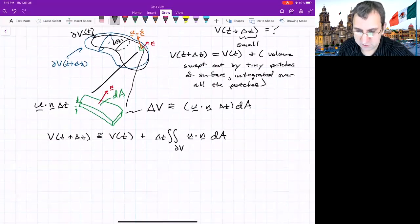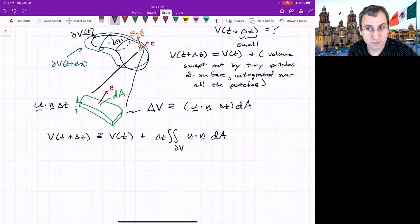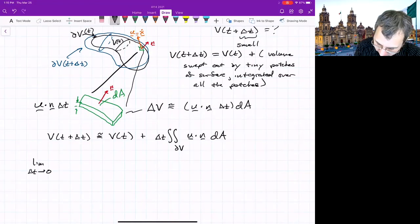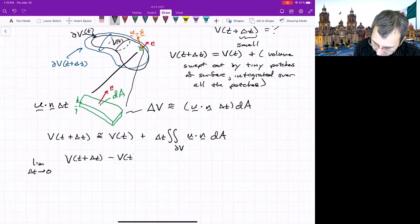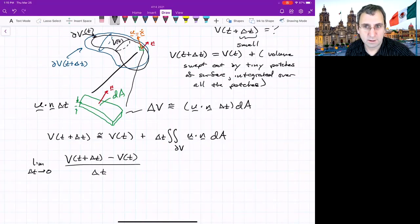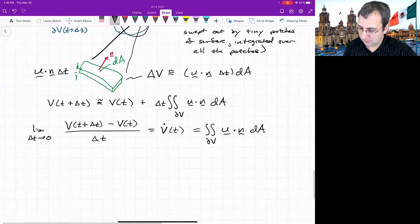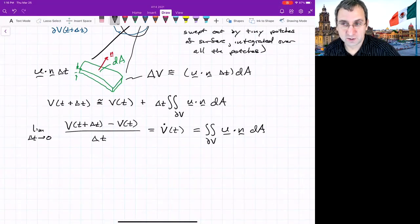This actually becomes equal if we look at the limit. So let's think about that. Let's take the limit as delta t goes to zero, and what do we have there? So the limit as delta t goes to zero, and let's rearrange this. So we've got vt plus delta t minus v of t divided by delta t. And maybe you recognize what that is. So this is the definition of the derivative. So this is v dot at time t. And what are we left with when we do that? It is this double integral over the boundary, u dotted with n dA. And now we use a result from vector calculus, right? We use the divergence theorem.